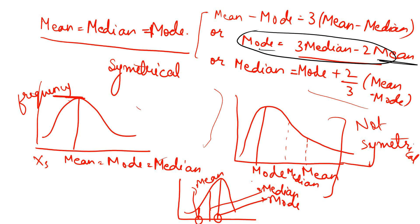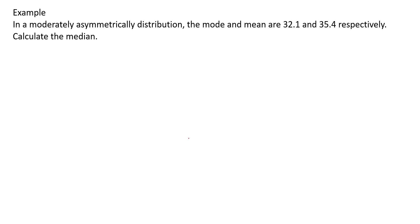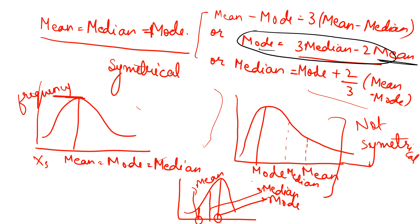Now let's discuss an example of how we use this relation. In a moderately asymmetrical distribution, the mode and mean are given — calculate the median. We know it's a moderately asymmetrical distribution, so this formula applies. If the case were symmetric, mean and median would be equal and mean minus mode would be zero, making both sides zero.